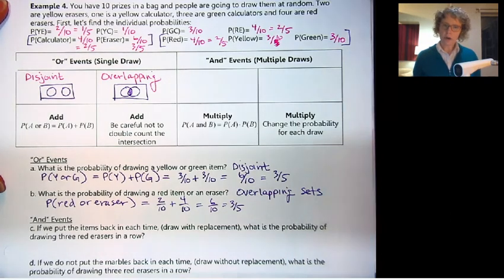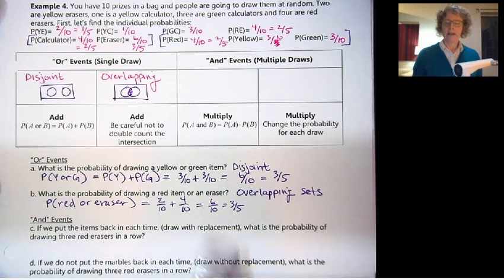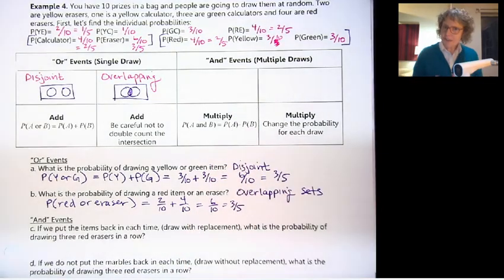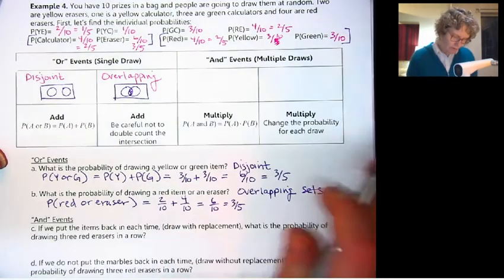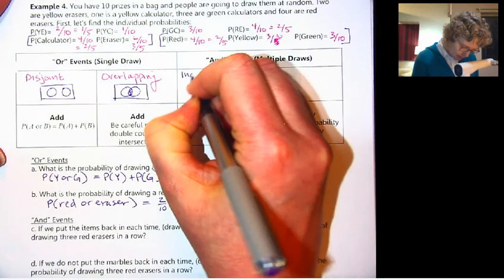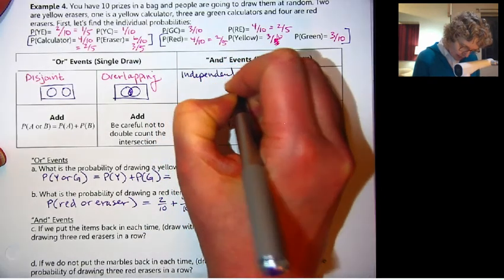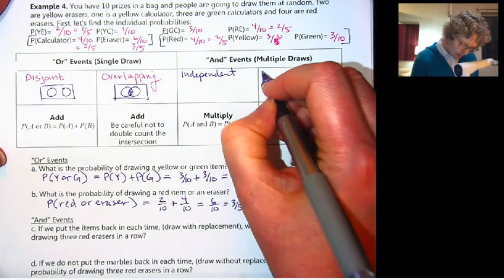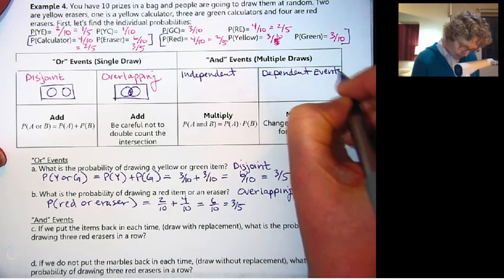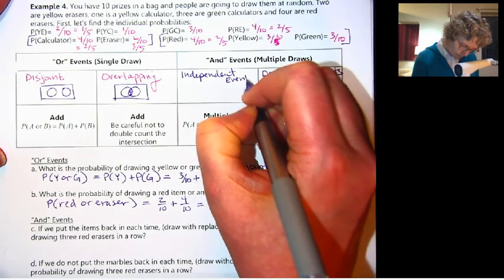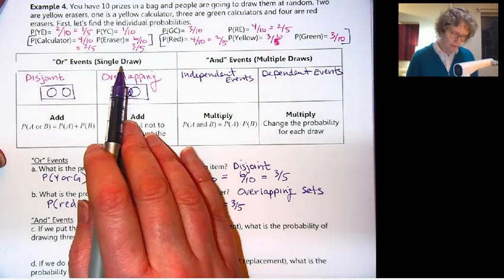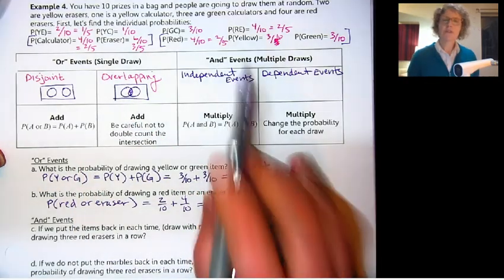We have to be careful, if we went down here and we did red or eraser, see how we would get 4 tenths plus 6 tenths? That would be 1, 100%. But we know that's not right. So it's really important if you have overlapping sets, to make sure that you're just counting them individually, and not double counting anything in the overlap.